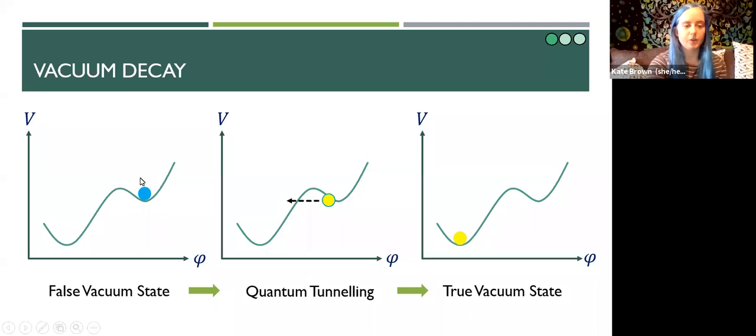Now in a classical system this local minimum here is a stable state. If a system finds itself here it'll remain here forever. However once we enter the quantum realm this is no longer stable, it's only metastable. A system can stay here for quite some time but eventually a quantum fluctuation is going to give it a kick and cause our field to tunnel from this local minimum which we refer to as the false vacuum state to this global minimum which we refer to as the true vacuum state.